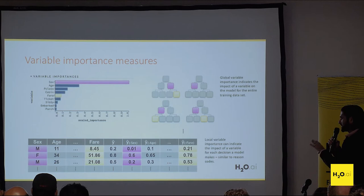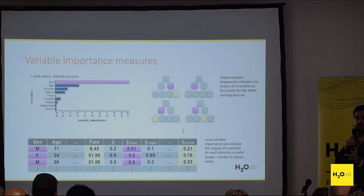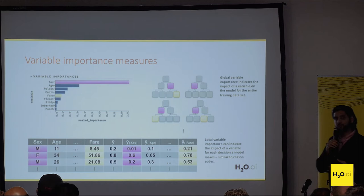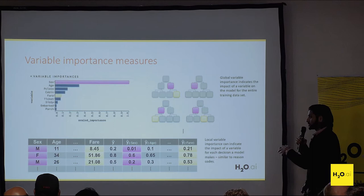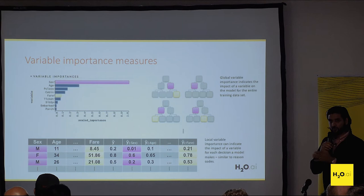We take that new prediction and subtract it from the original. The impact is the difference of those predictions. It gives us an indication of what's going on with that particular row — a more local explanation. Whereas global variable importance is across the entire dataset, with LOCO we have variable importance for a specific row or subset of data. This is the distinction between global versus local interpretability.